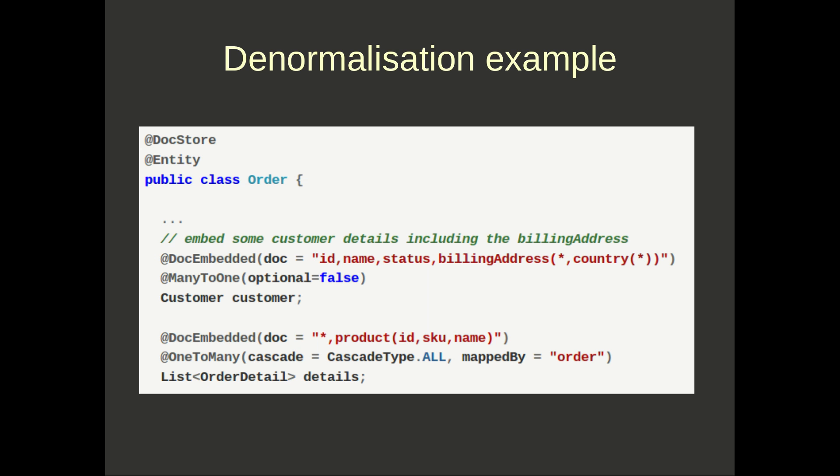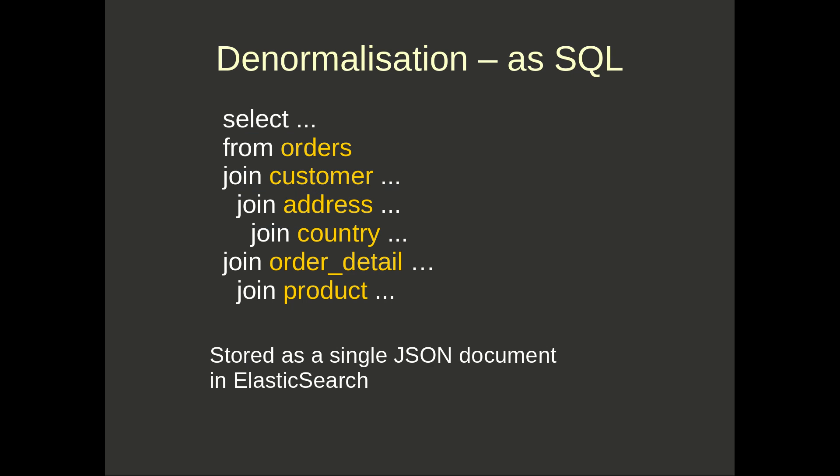In another example, we're embedding more data into the order: status, billing address, and for the billing address the nested country details — all going into the order index. For each order detail we're also embedding the product SKU and name. If we look at that denormalization as SQL, it would be: select from orders, join customer, join address, join country, join order detail, join product — collecting all that information and storing it as JSON documents into the order index in Elasticsearch.